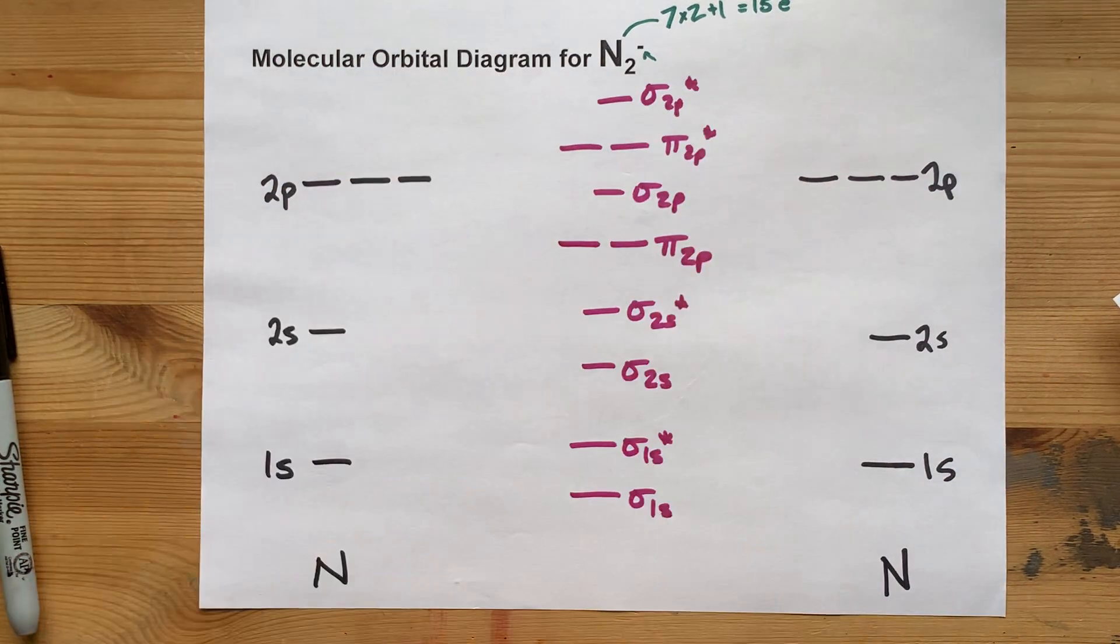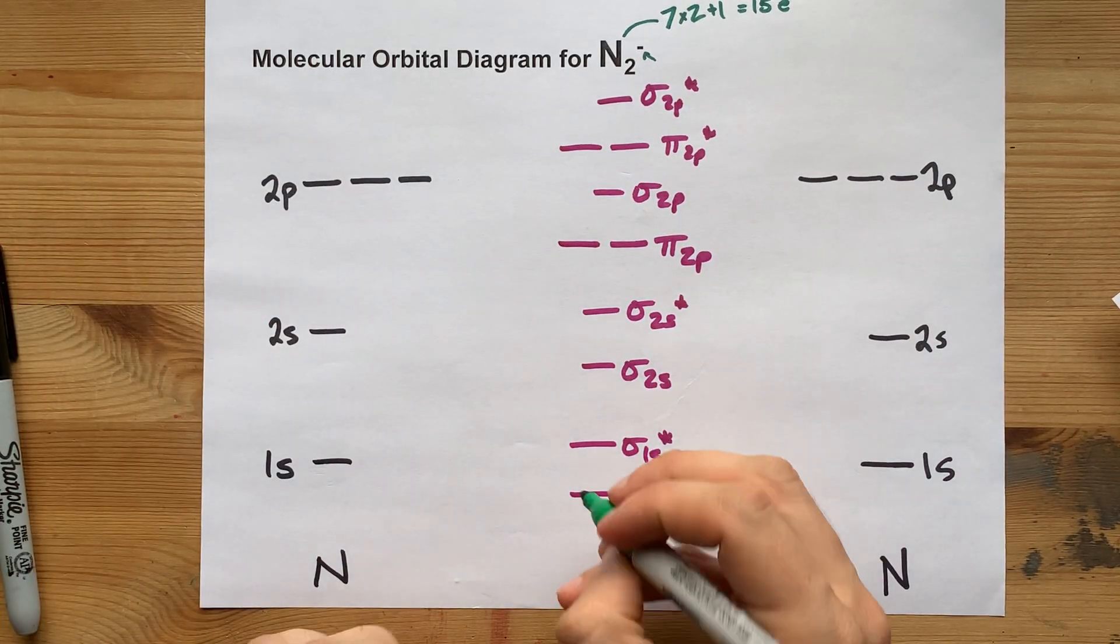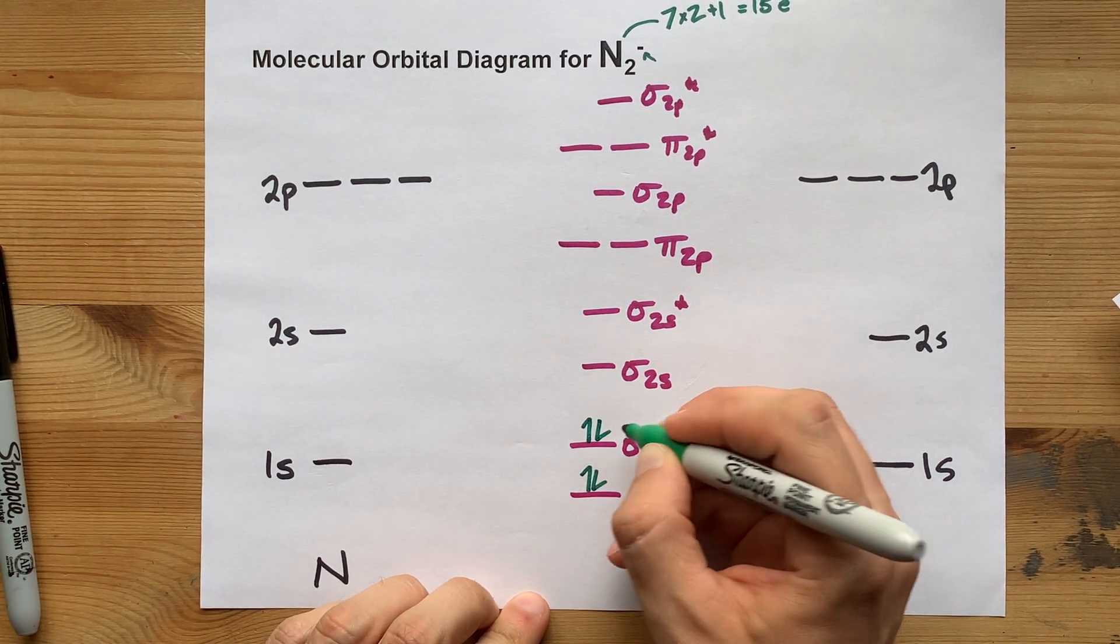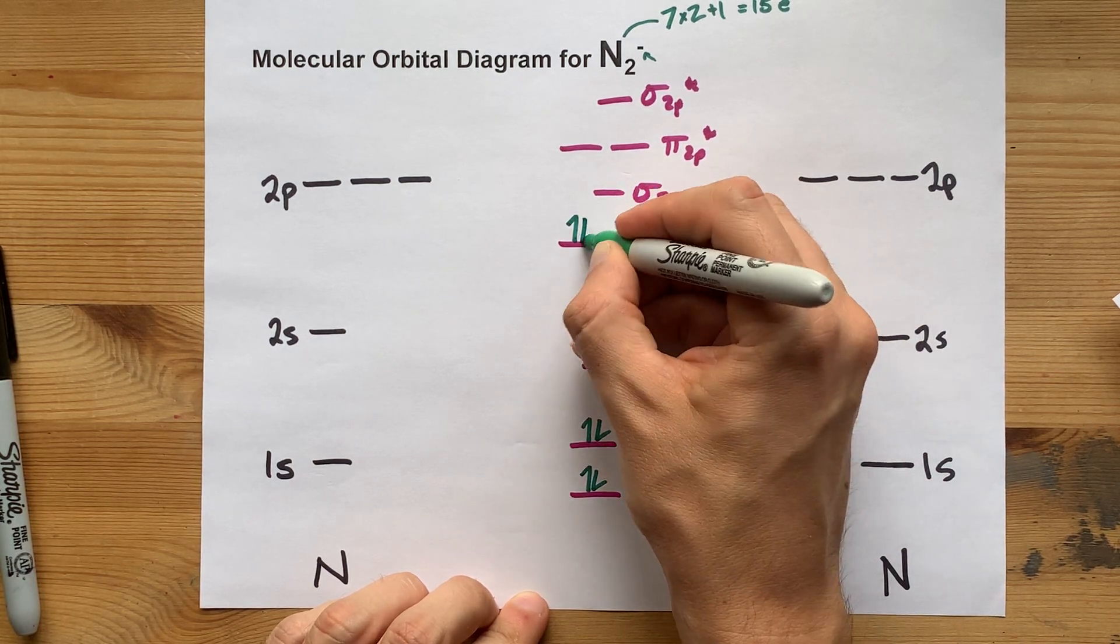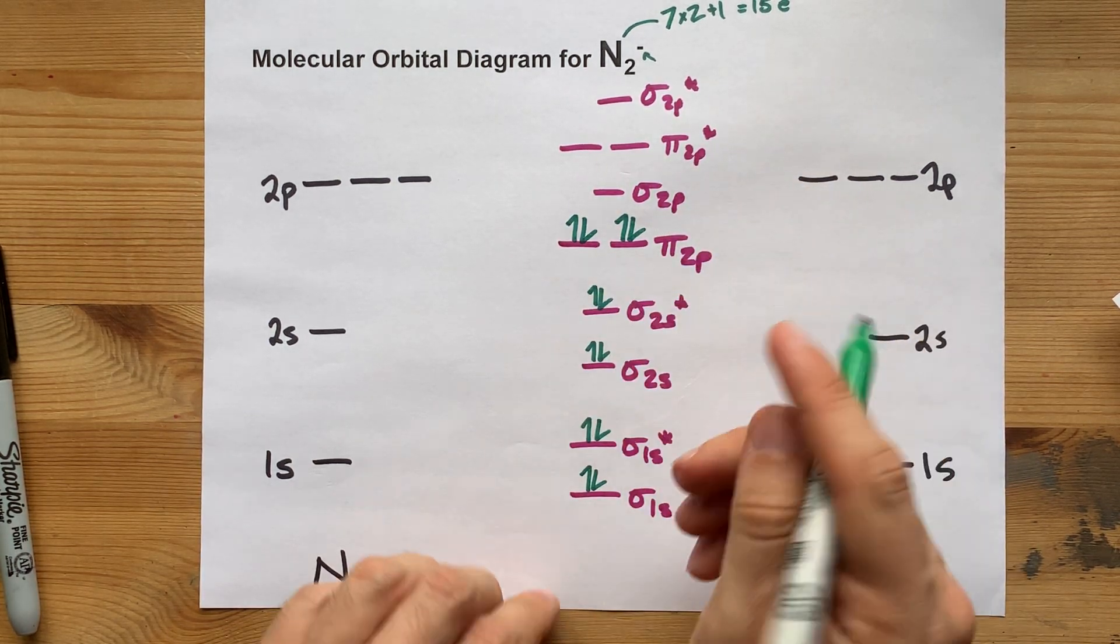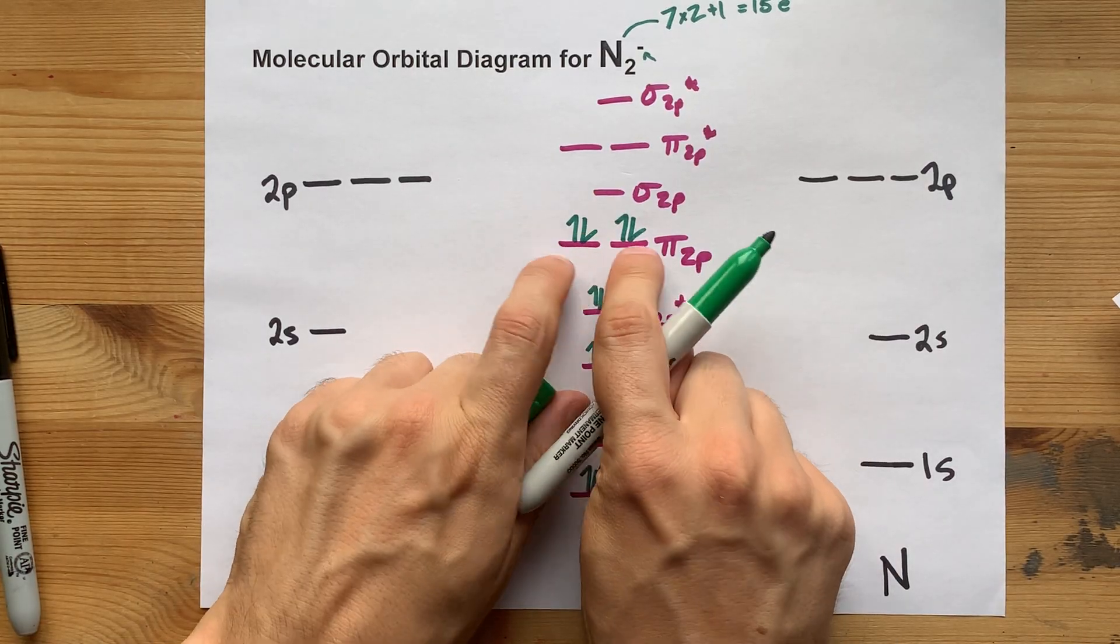Let's fill it from the bottom up. Aufbau principle: 1, 2, 3, 4, 5, 6, 7, 8, 9, 10, 11, 12. Did you see that? I spread them out before I doubled them up.